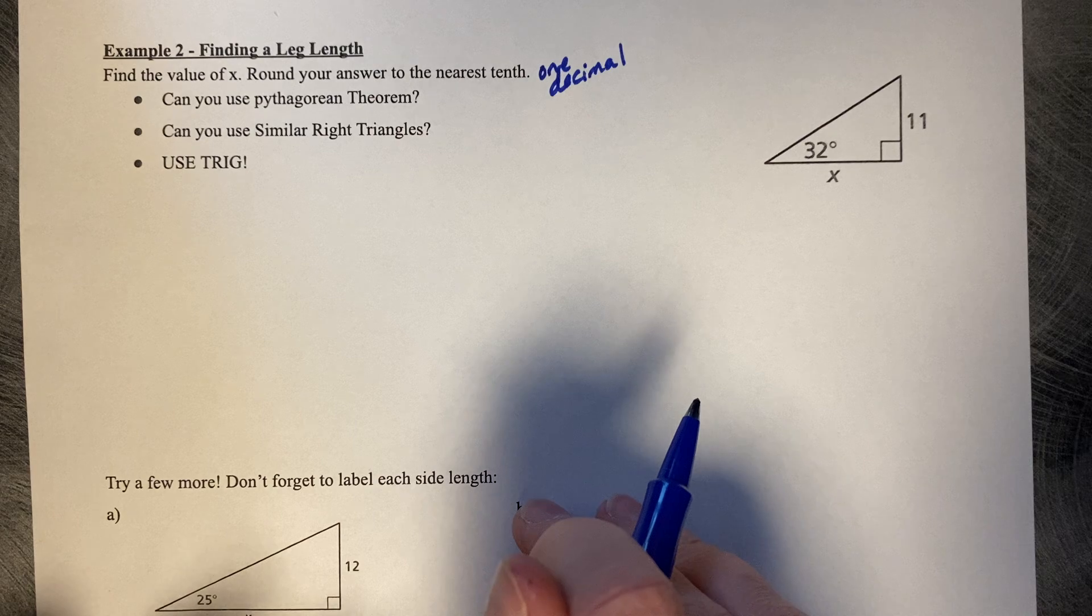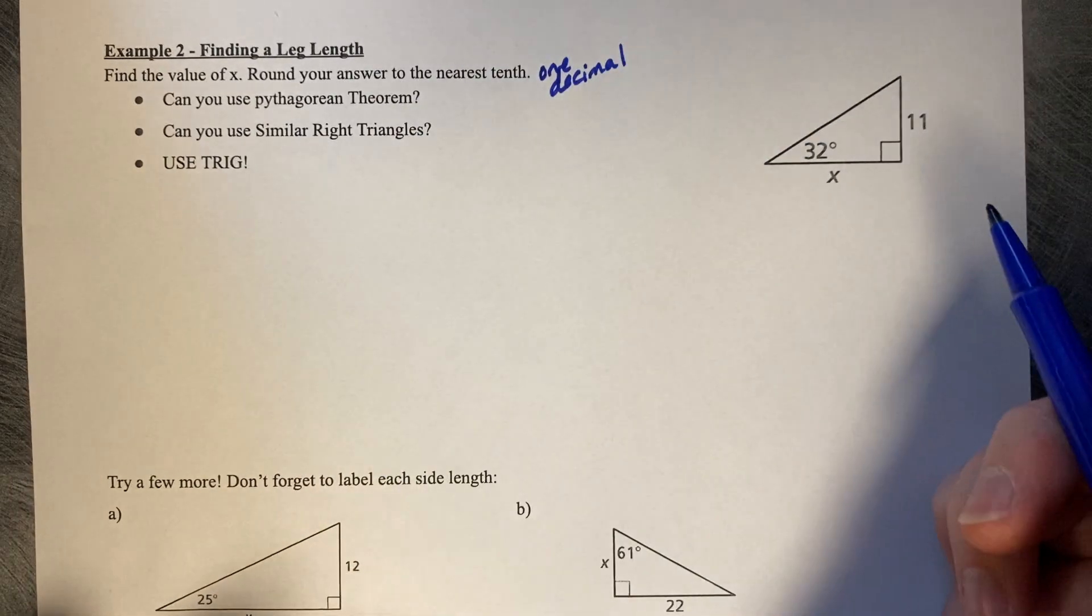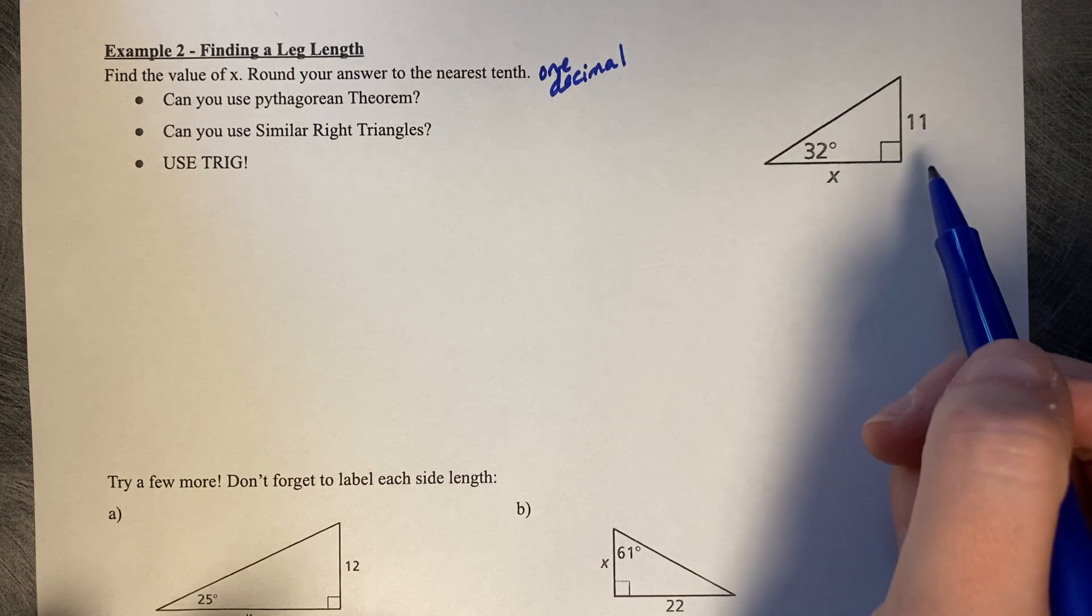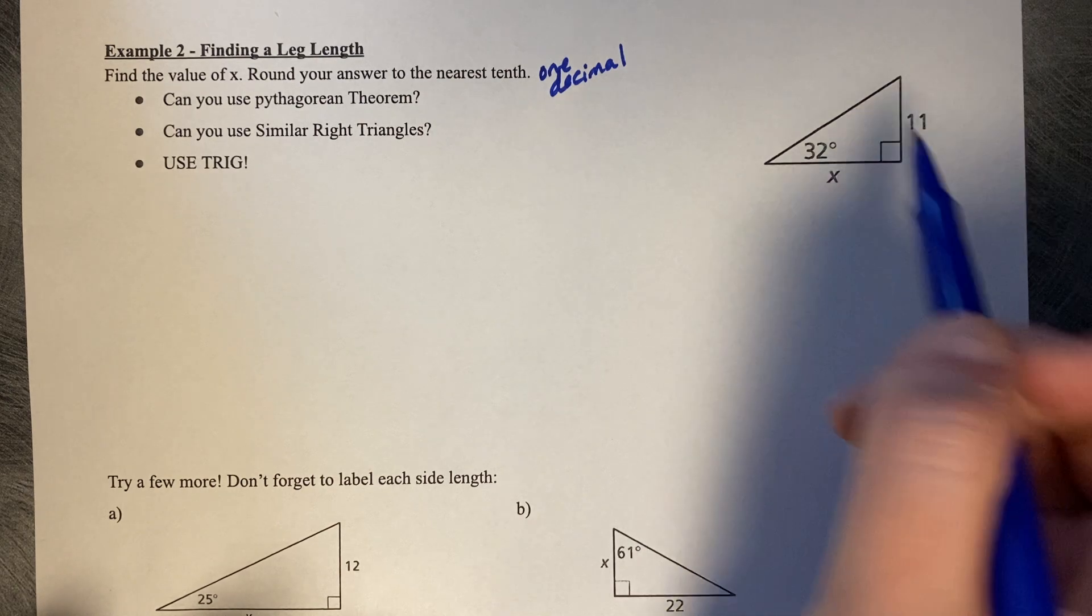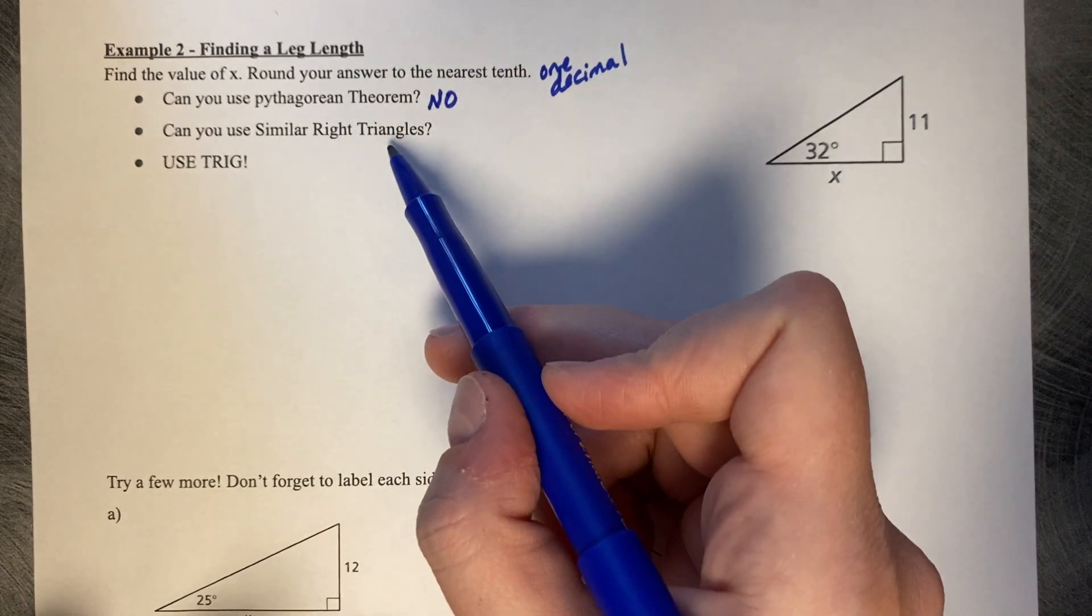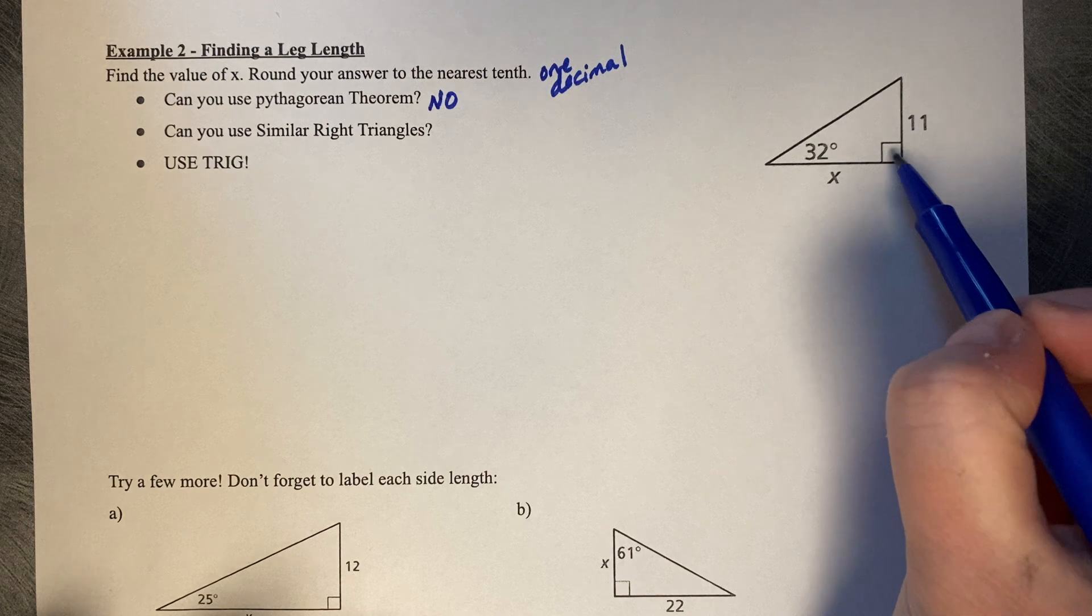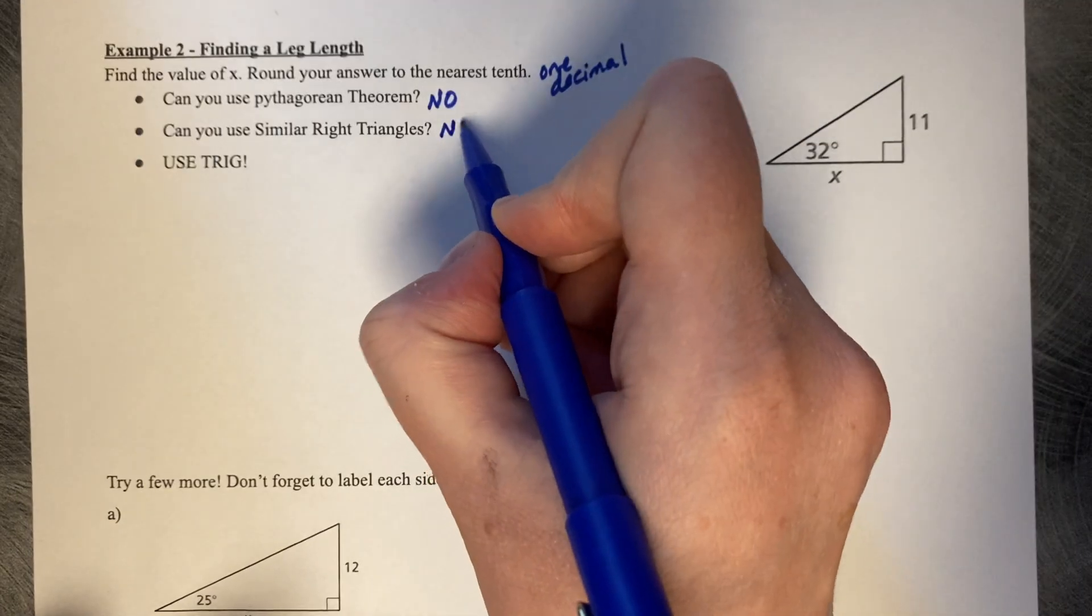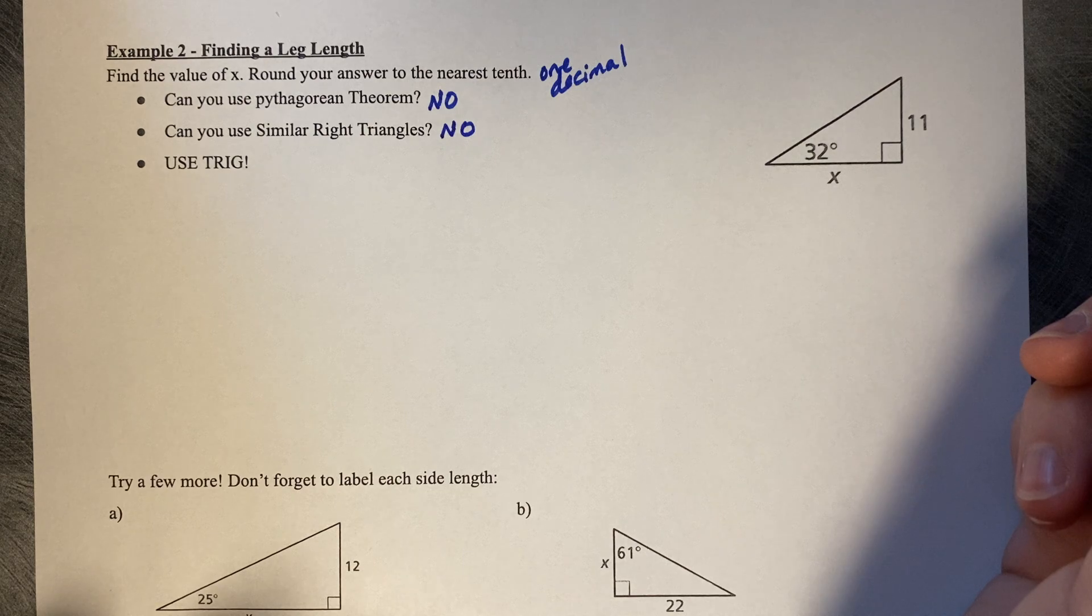Can you use the Pythagorean theorem? Well, the only side length I know is 11. That's not enough information to use the Pythagorean theorem, so no. Can you use similar right triangles? Is the altitude drawn in? No, so we cannot use similar right triangles.